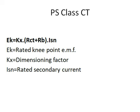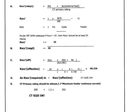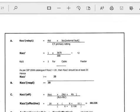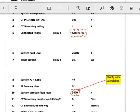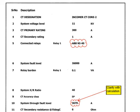Now let us look at a worked example of CT sizing. Suppose at an 11 kV voltage level, the CT ratio is 300/1 ampere — primary current 300 A and secondary current 1 A. The relay used is a BBNI-40 relay with a relay burden of 0.1 VA. The CT accuracy class is 5P and the CT secondary resistance Rct is 6 ohms.